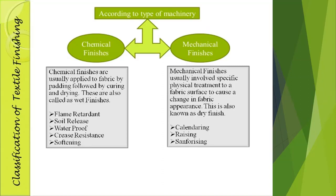Mechanical finishing refers to processes where machines or physical treatments are required. If the finishing process is carried out because of machines or physical treatment, those finishing processes come under the category of mechanical finishing. Chemical finishes are usually applied to fabric by padding, followed by curing and drying. These are also called wet finishes.